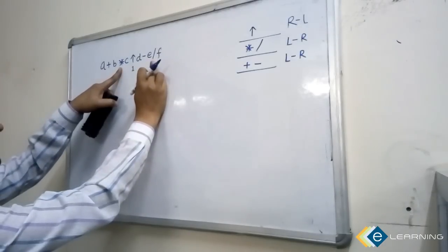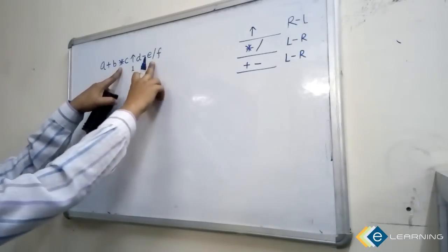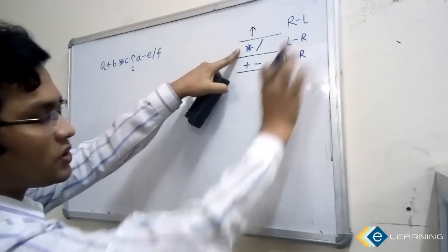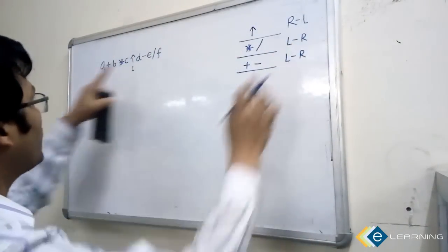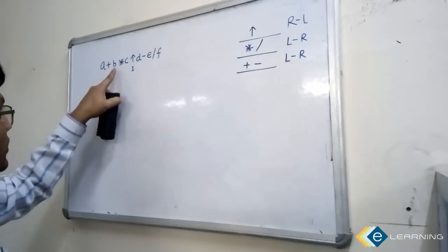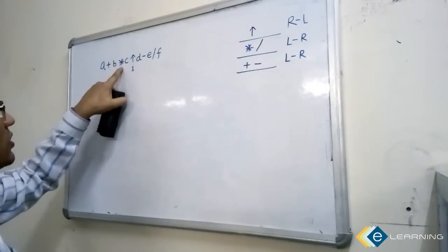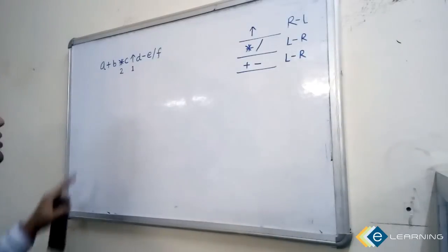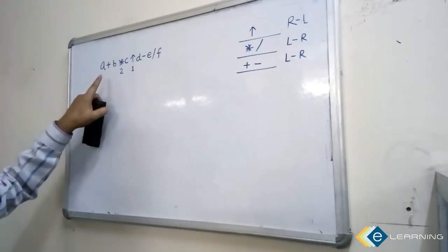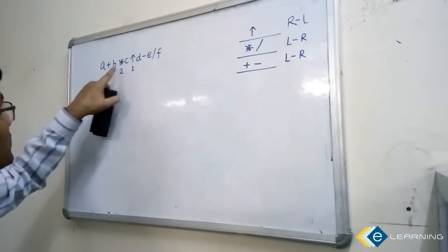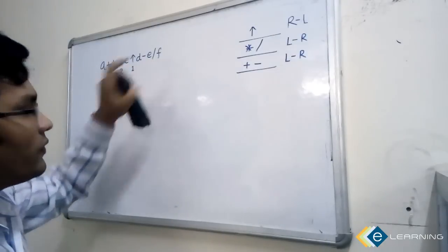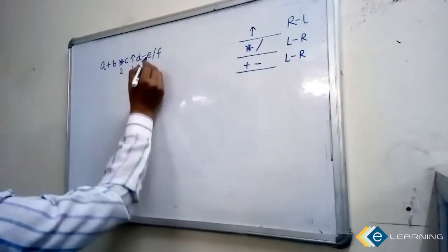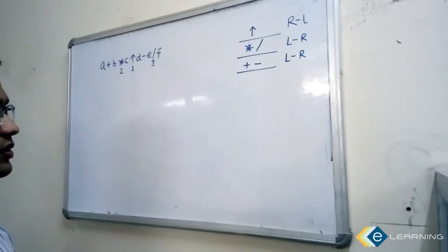When two or more operators have the same precedence, associativity tells you which to take first. Going left to right, star comes before divide, so star gets the second number. After that, the remaining operators are plus, minus, and divide. Among these, divide has the highest precedence and gets number three.